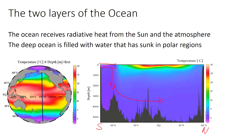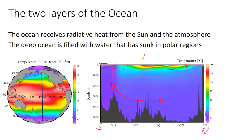The deep ocean is largely filled up by the sinking of cold water that forms in high-latitude regions. These sinking regions are currently around Antarctica, and there are some in the North Atlantic as well. You also get subduction of water from the surface in some other areas. The water that sinks does so because it is cold, leading to the deep ocean being filled with cold water, while the surface ocean receives solar energy and is warmed up, so it's less dense and floats on top.